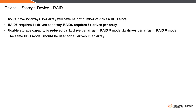Every NVR will have two arrays. For example, if an NVR has eight slots it will have two arrays each with four slots. If an NVR has 12 slots it will have two arrays each with six slots.